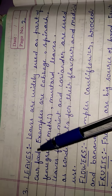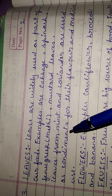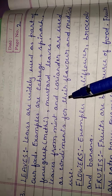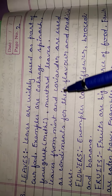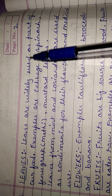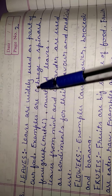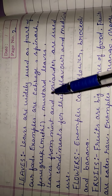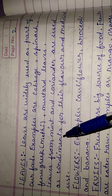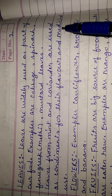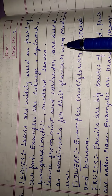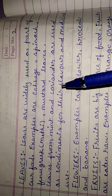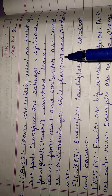Now, leaves. The basic function of leaves is to prepare food by the process of photosynthesis. But in some plants, leaves are also used as food. Leaves are widely used as part of our diet — for example, cabbage, spinach, fenugreek, and mustard leaves. Leaves from mint and coriander are used as condiments for their flavor and for medicinal purposes. So leaves of some plants are eaten as food, and some are used for flavoring or medicine.